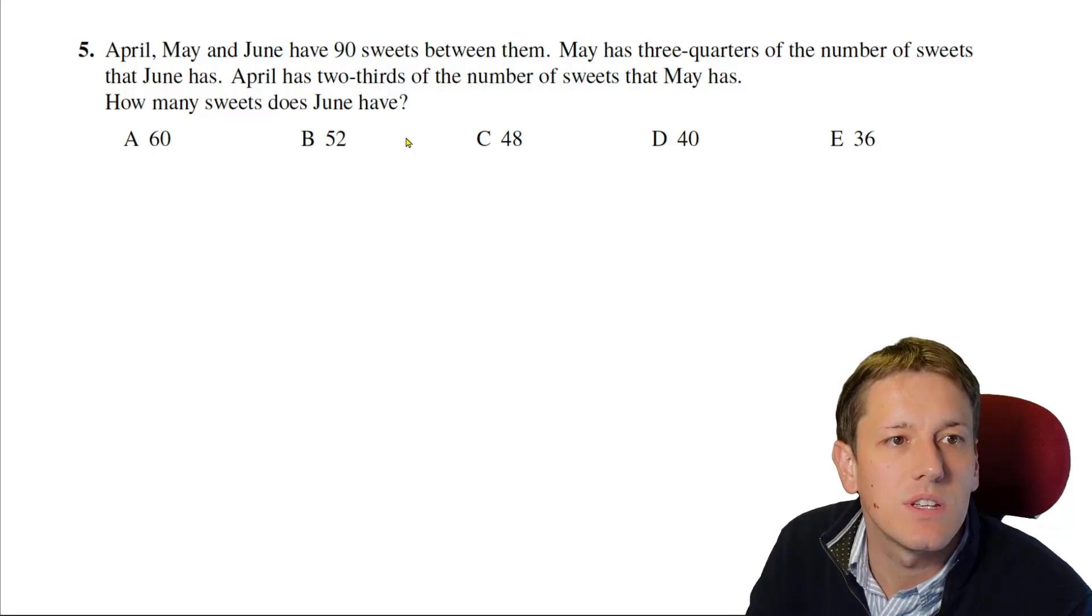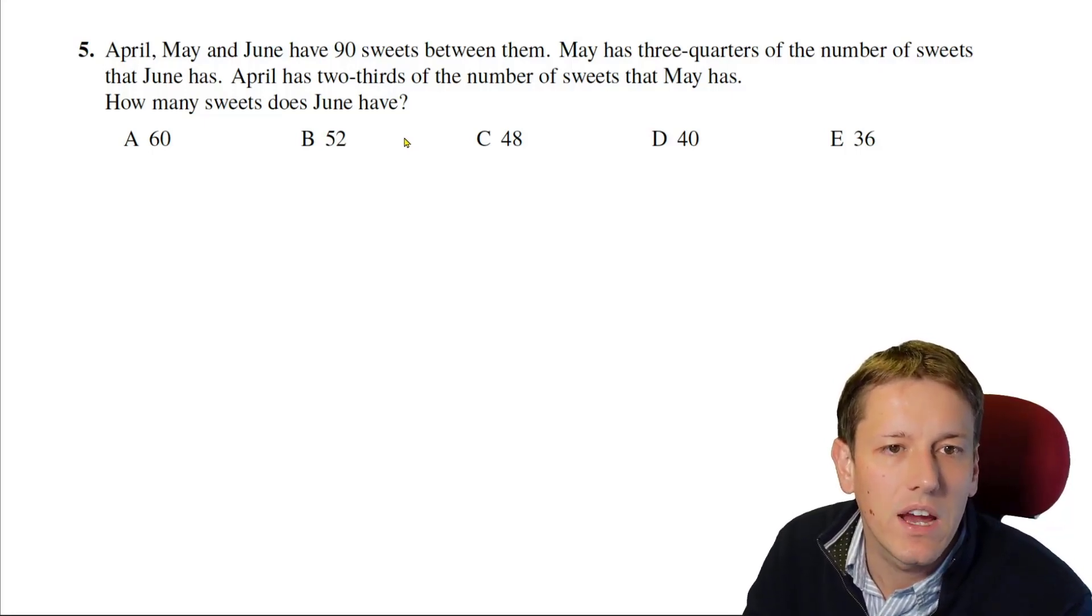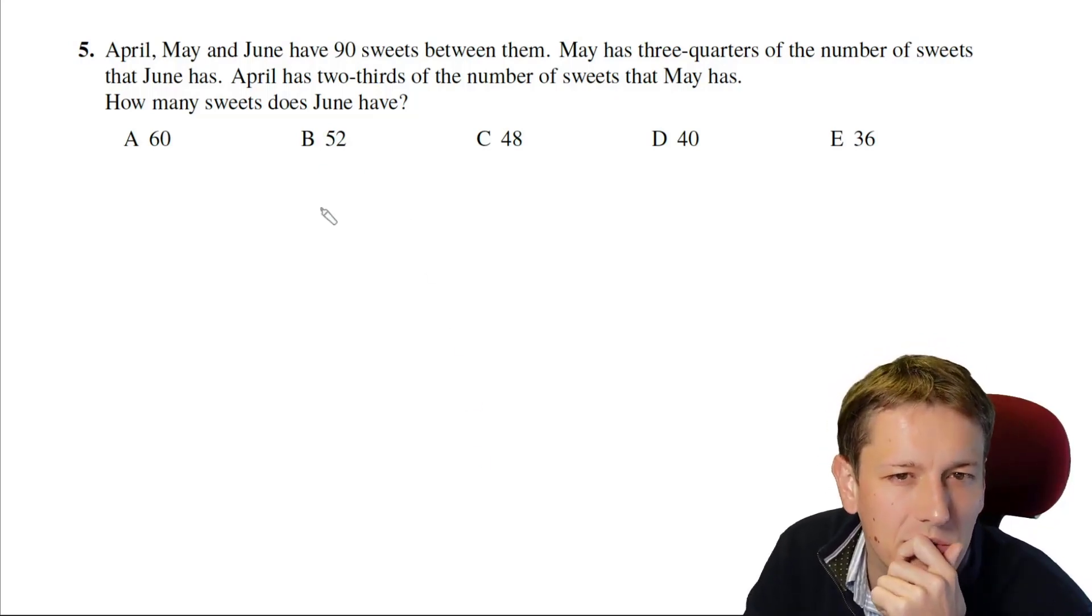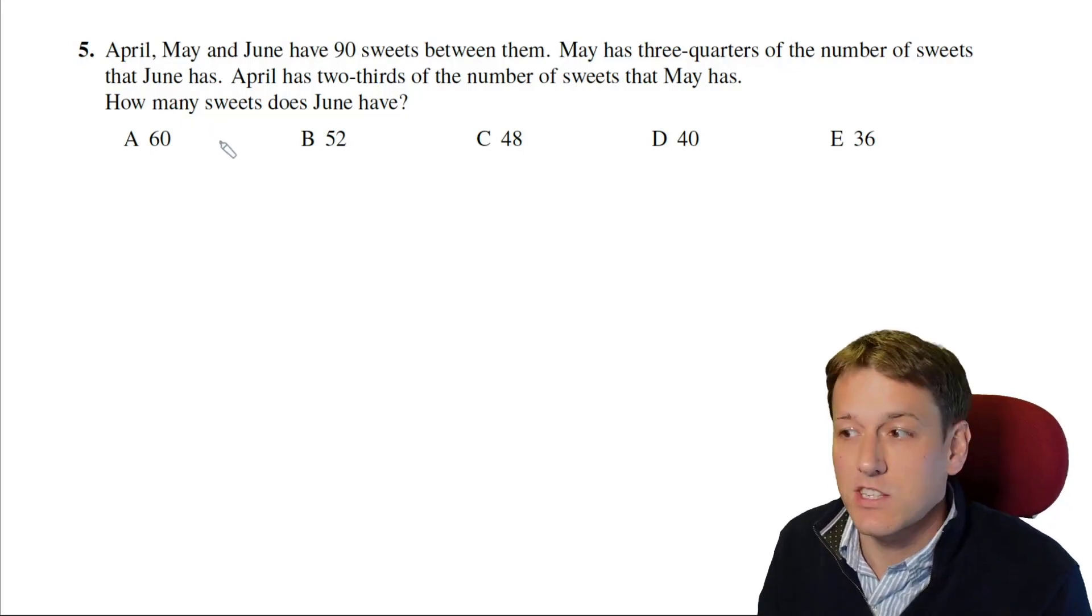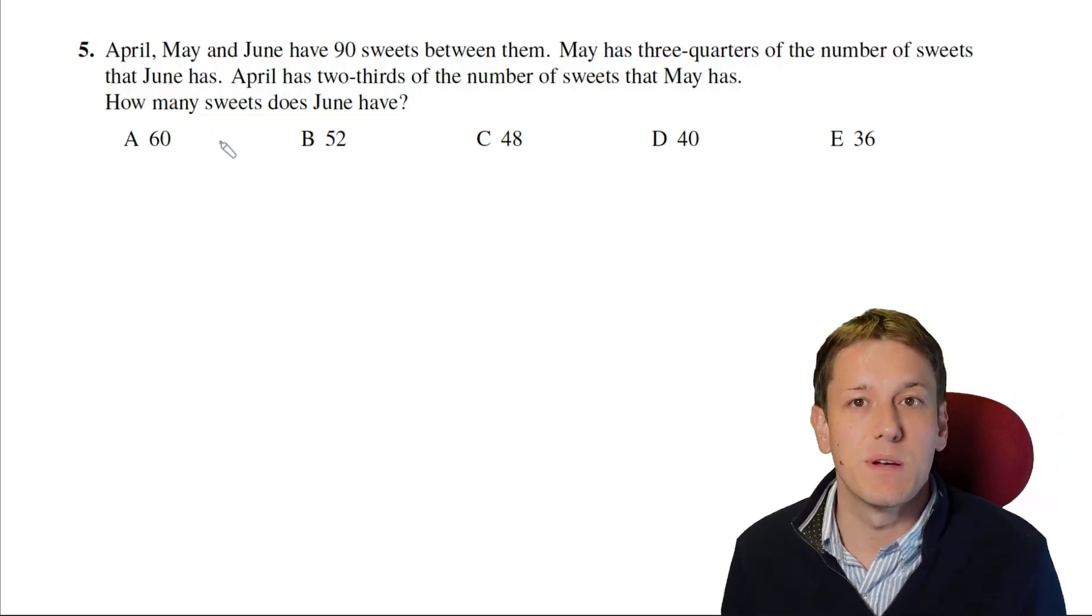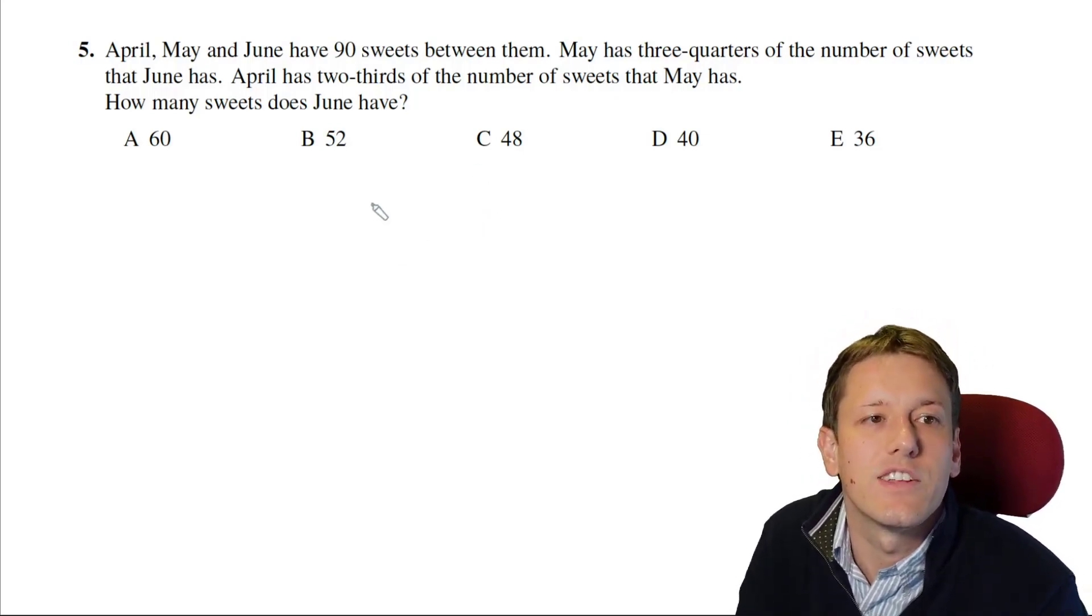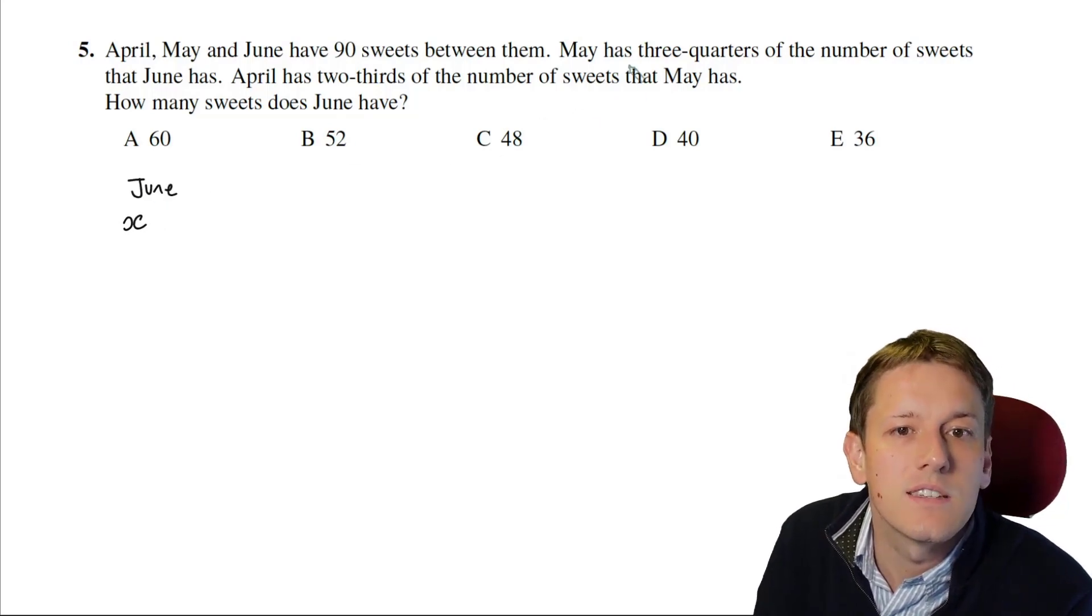April, May, and June have 90 sweets between them. May has 3 quarters of the number of sweets that June has. April has 2 thirds of the number of sweets that May has. How many sweets does June have? So in the intermediate math challenge, we should jump to algebra a bit more quickly than in the junior math challenge. If you've done those, a lot of the questions, algebra just makes it a lot easier.